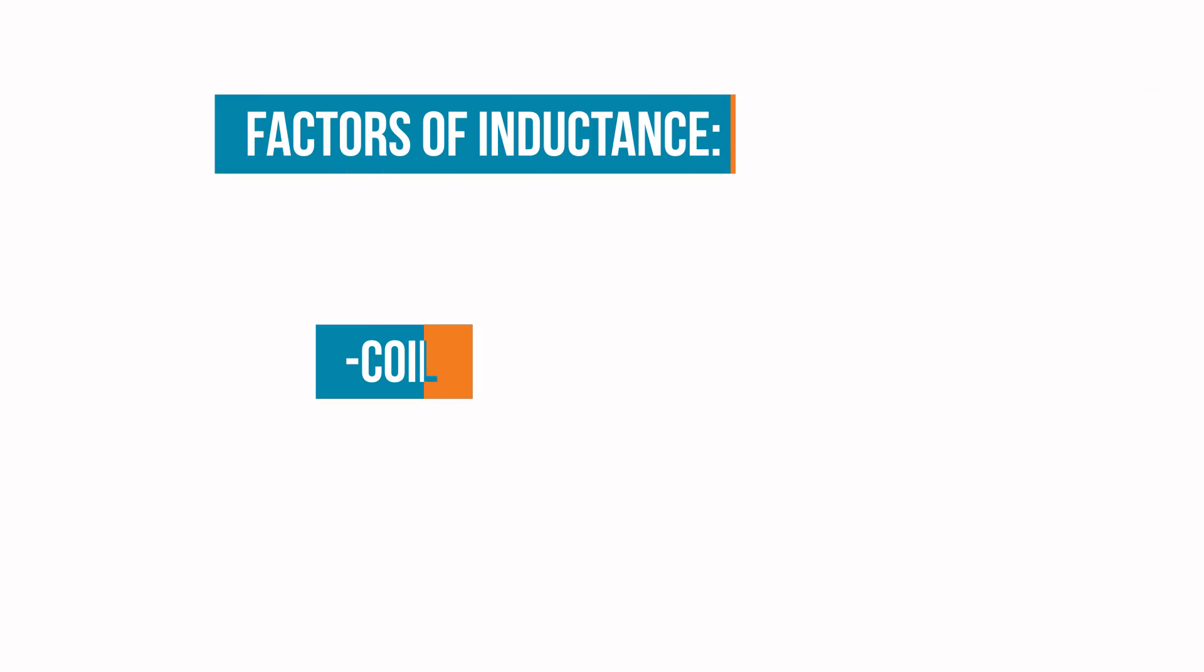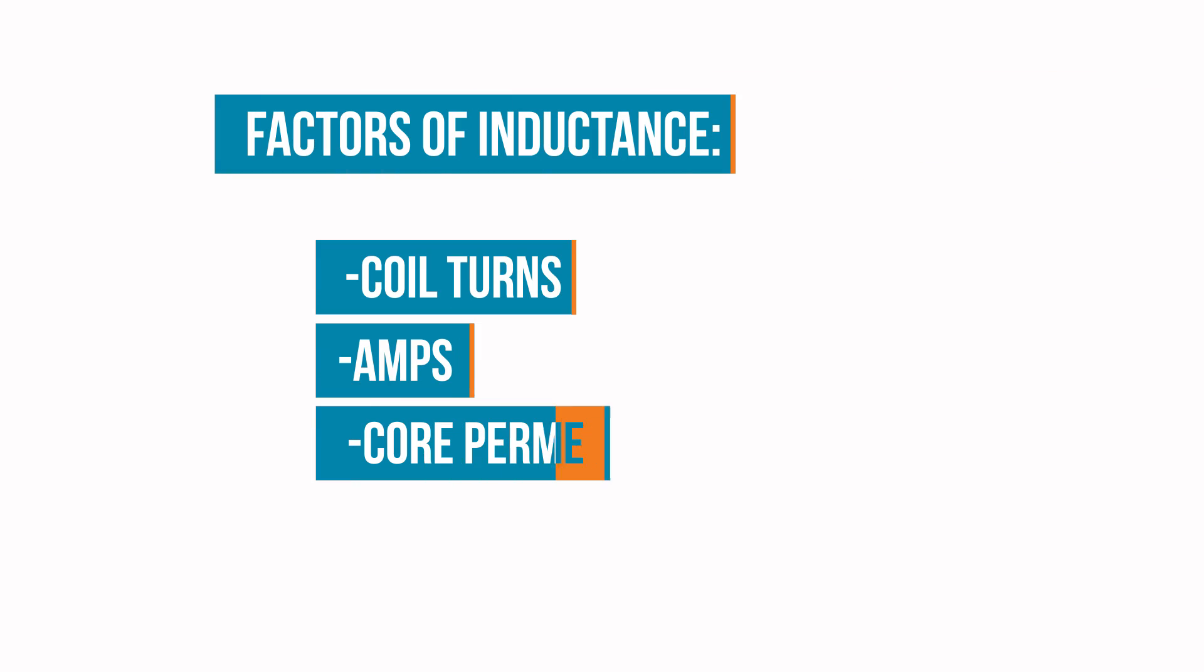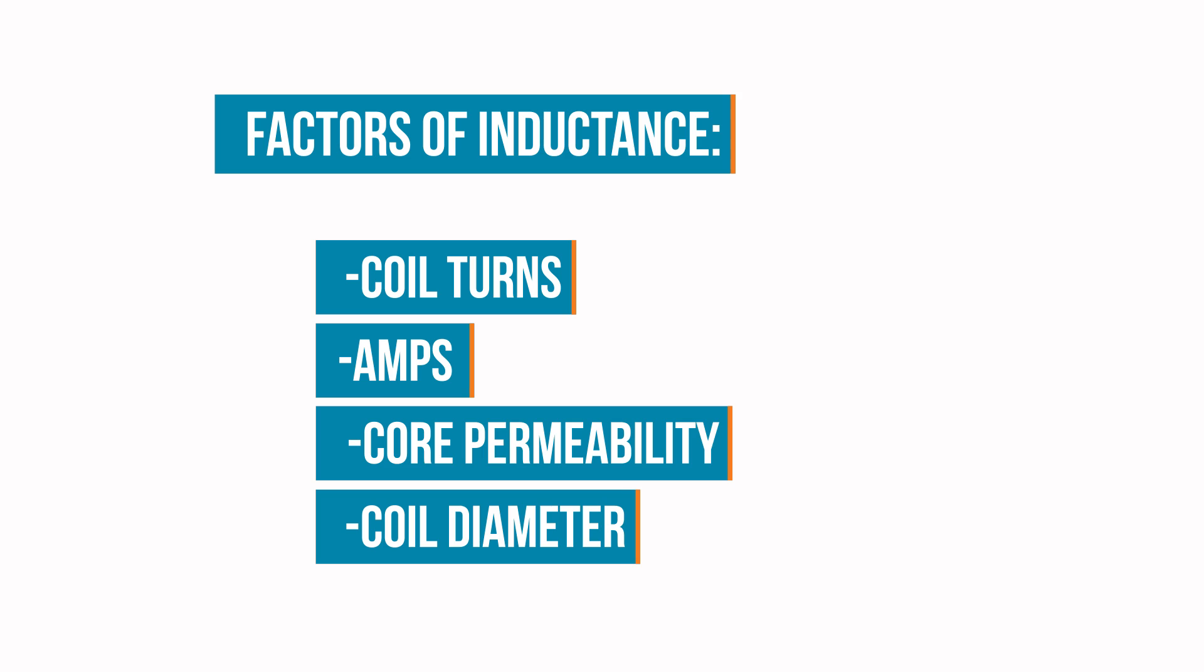In the magnetism episode, we learned what factors affect the amount of flux generated by a coil. Since magnetic flux influences inductance, inductance is affected by those same factors. The number of turns in the coil, the amperage of the current, and the permeability of the core all factor into inductance. Additionally, unlike with flux, the diameter of the coil is a factor.